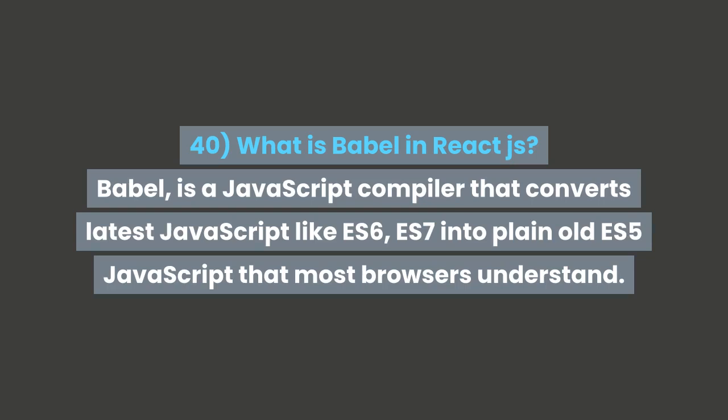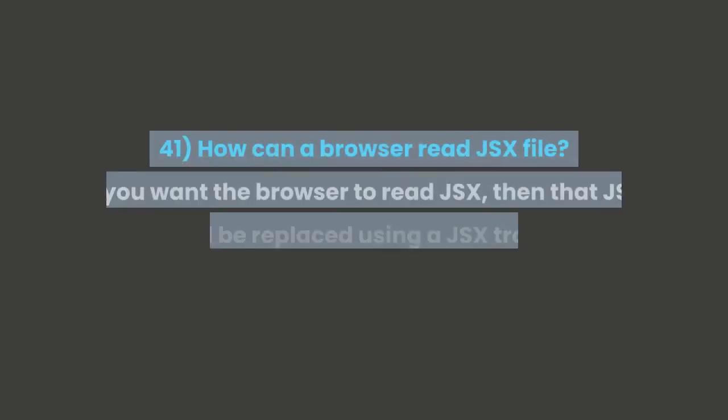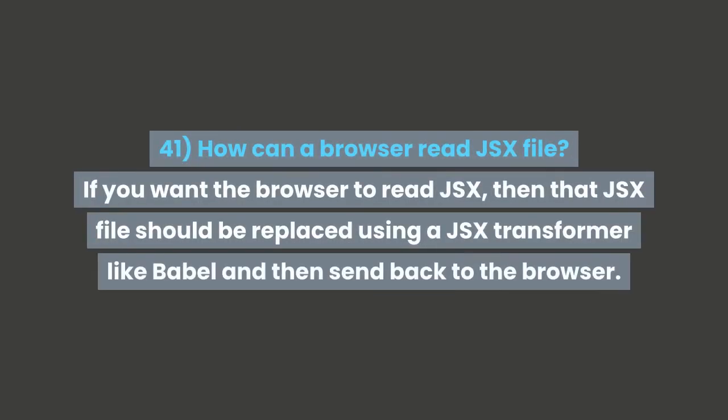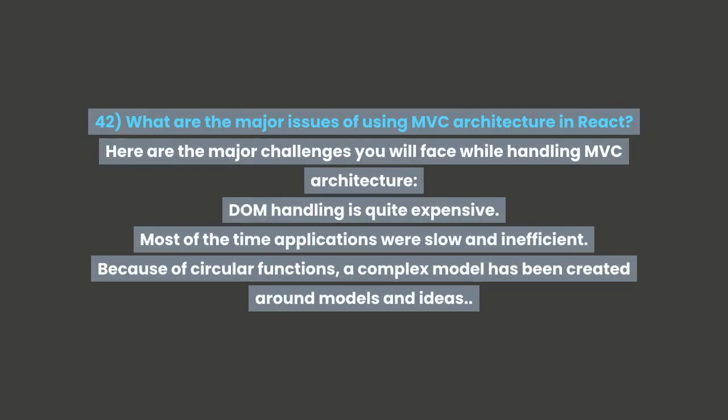Question 41: How can a browser read a JSX file? If you want the browser to read JSX, the JSX file should be transformed using a JSX transformer like Babel and then sent back to the browser. Question 42: What are the major issues of using MVC architecture in React? Here are the major challenges you will face while handling MVC architecture.